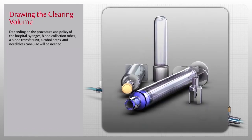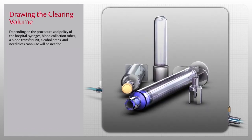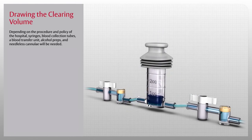Note, depending on the procedure and policy of the hospital, syringes, blood collection tubes, a blood transfer unit, alcohol preps, and needleless cannula will be needed. First, close the distal shutoff valve by turning the handle perpendicular to the tubing.